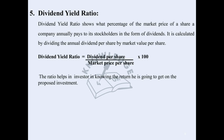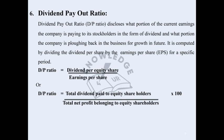The next is Dividend Payout Ratio. It discloses what portion of the current earnings of the company is being paid to its shareholders in the form of dividend, and what portion the company is plowing back into the business for future growth. It is computed by dividing the dividend per share by the earnings per share for a specific period.